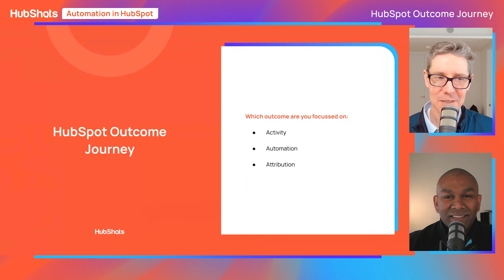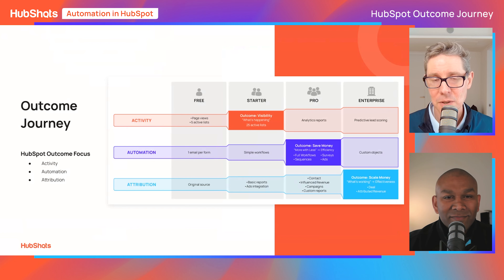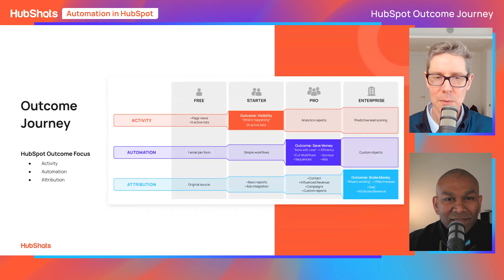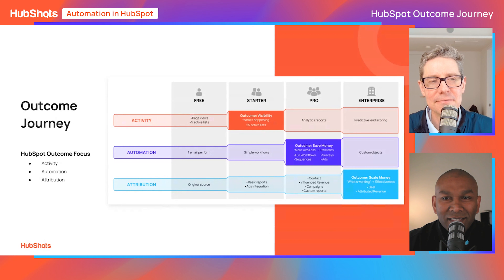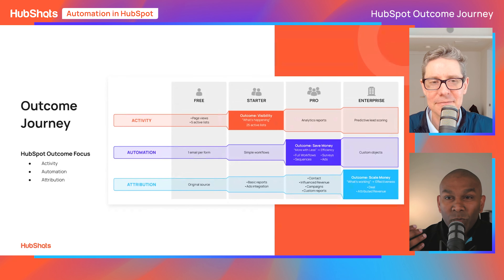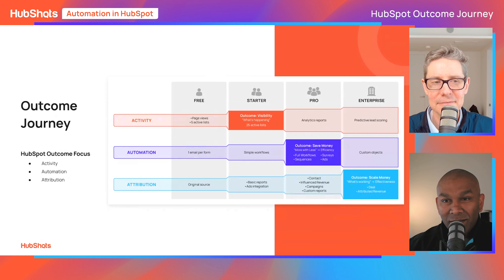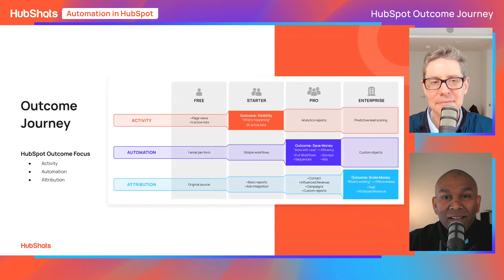Now let's dive into HubSpot-specific discussion and talk about the outcome journey. We've got a simple diagram — if you're watching on YouTube you'll see it, but if you're listening on the podcast make sure you subscribe to our show notes at hubshots.com/subscribe to get all these diagrams. The outcome focus looks at three things: activity, automation, and attribution. What we want to show is how that lines up with the tiers of HubSpot.